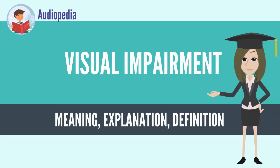Visual impairment, also known as vision impairment or vision loss, is a decreased ability to see to a degree that causes problems not fixable by usual means, such as glasses. Some also include those who have a decreased ability to see because they do not have access to glasses or contact lenses. Visual impairment is often defined as a best-corrected visual acuity of worse than either 20/40 or 20/60.